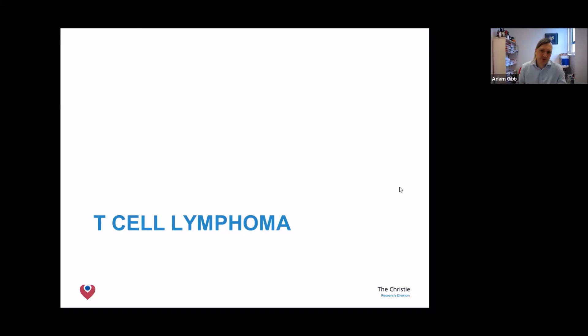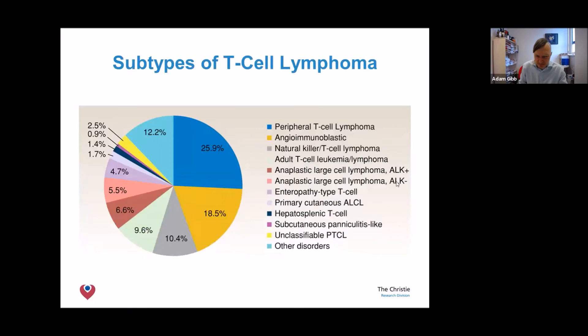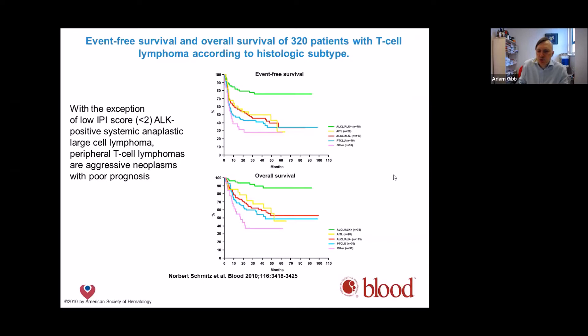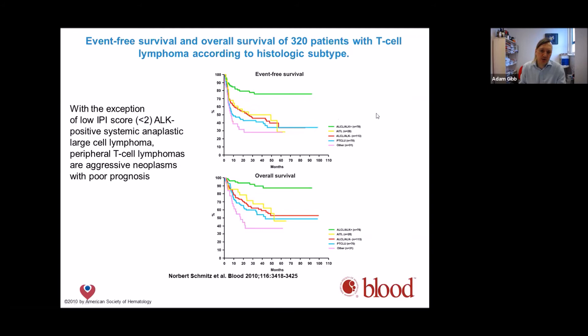T-cell lymphomas are rarer than B-cell lymphomas, forming only around 10 percent of aggressive non-Hodgkin lymphoma in the Western world, but up to around 25 percent in Asia. T-cell lymphoma is a heading covering multiple subtypes — the commonest are peripheral T-cell and angioimmunoblastic. We ordinarily treat these patients with CHOP, and the results are not quite as good as in DLBCL, unless you have the particularly rare subtype ALCL with ALK positivity, which is typically a condition of younger adults.